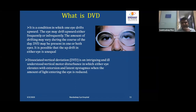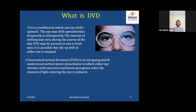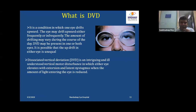Can fusion also be developed? Yes. The reason fusion range decreases is the constant misinnervation happening. The moment you can increase the fixation of the non-dominant eye as the primary fixating eye, interocular binocular competition decreases, and with that decrease, better fusion persists, resulting in improved vertical fusion as well. For mild to moderate DVD, this vision therapy approach will help.